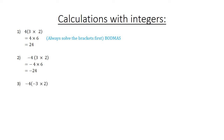Negative 4 in brackets: negative 3 times 2 equals negative 4 times negative 6 equals 24. And 4 in brackets: negative 3 times negative 2 equals 4 times 6 equals 24.